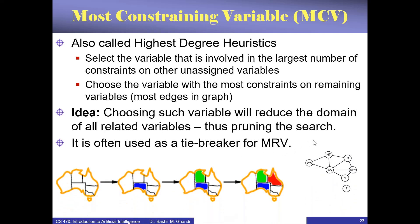Here's what it means: when we start, all the variables have the same number of remaining values — they are all three. But if you look at the graph, South Australia has the most connections with other variables — it is bordering five regions. All the others are either three or two, except Tasmania which is disjoint. So this heuristic tells us we should color South Australia first.